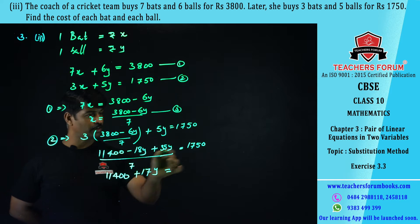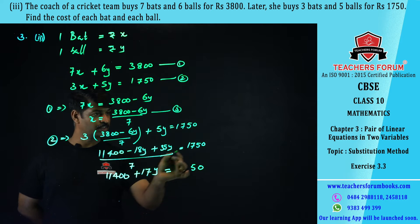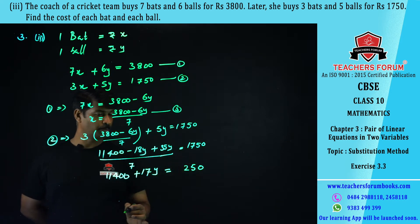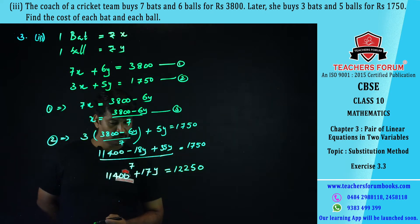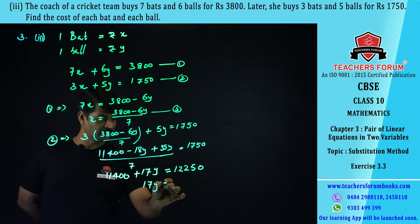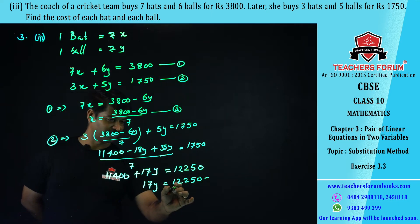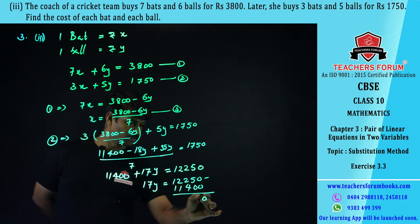17y = 12250 − 11400 = 850. So y = 850 / 17 = 50. The value of y is 50.